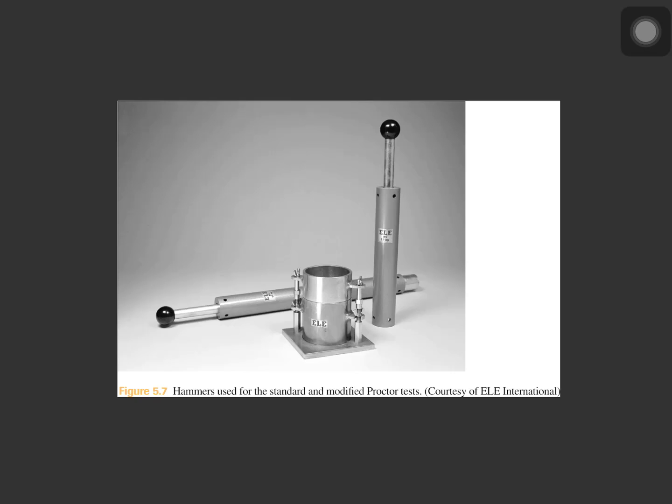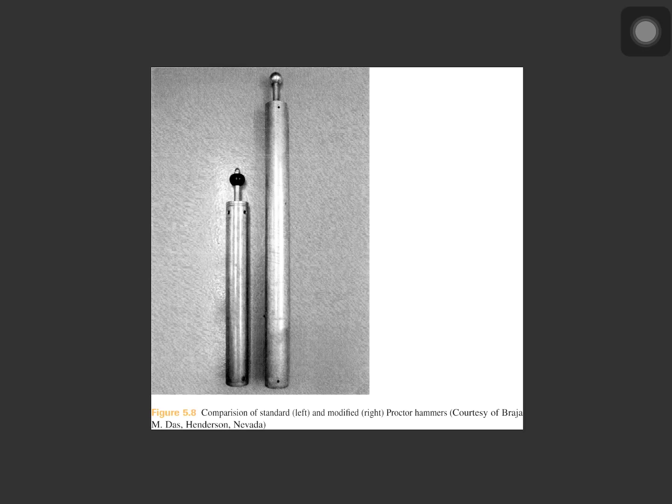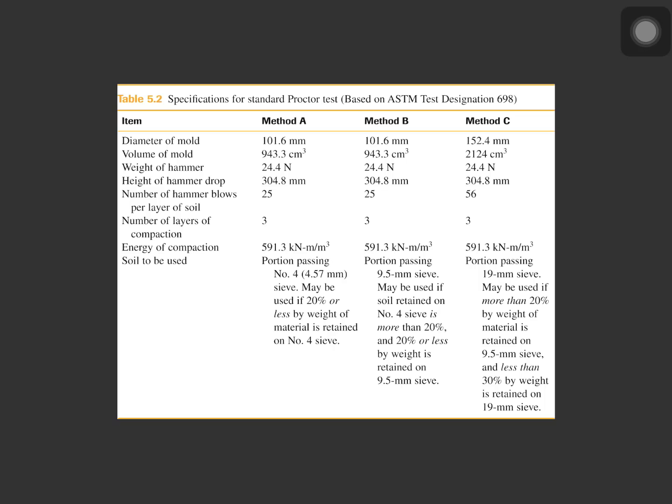Here is the comparison of the hammer used in the standard and modified proctor test in the figure. On the left is the hammer used for the standard proctor test, and on the right is the hammer used for the modified proctor test. In this table, we can see the specifications for standard proctor test with different methods, with the diameter of mold, volume of mold required, weight of hammer, height of hammer drop, number of hammer blows per layer, number of layers, and energy of compaction of the soil to be used.